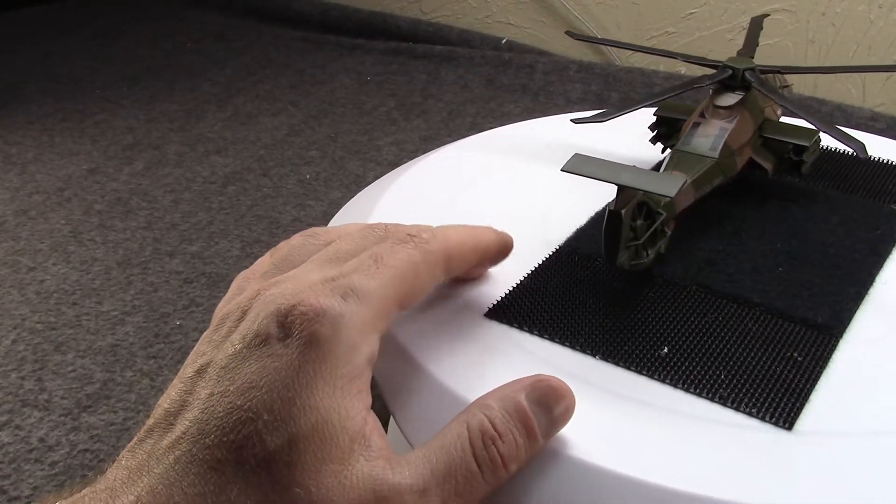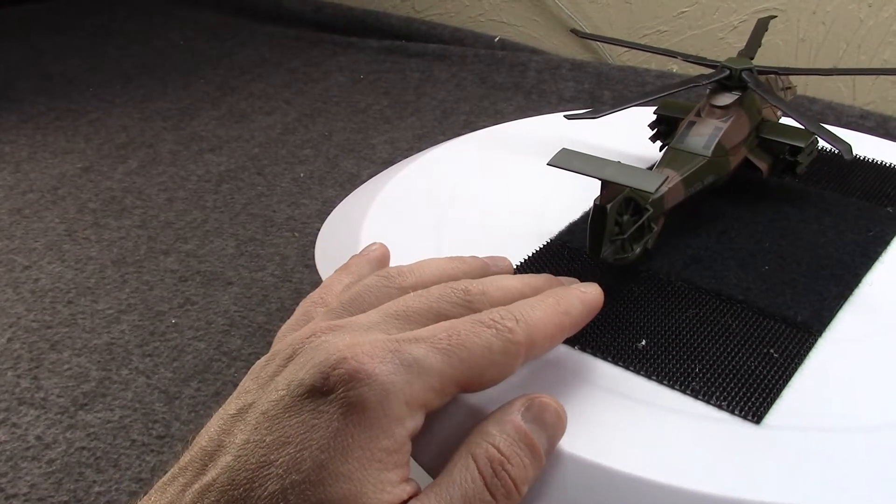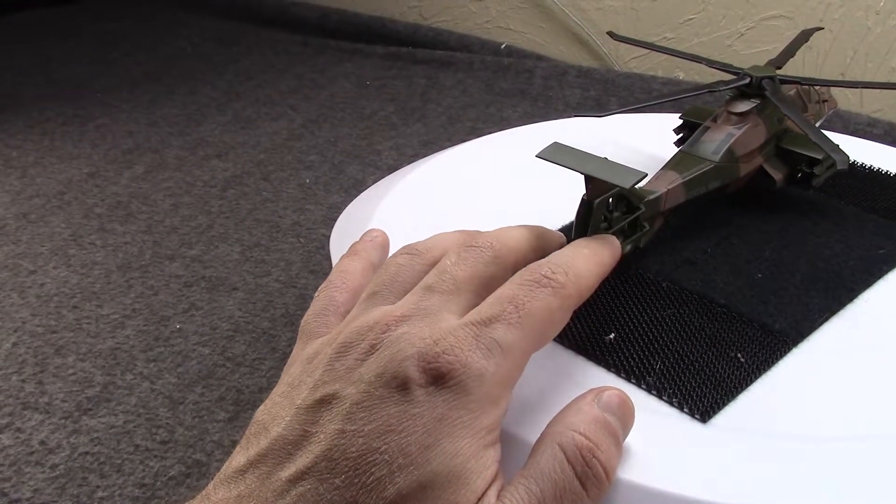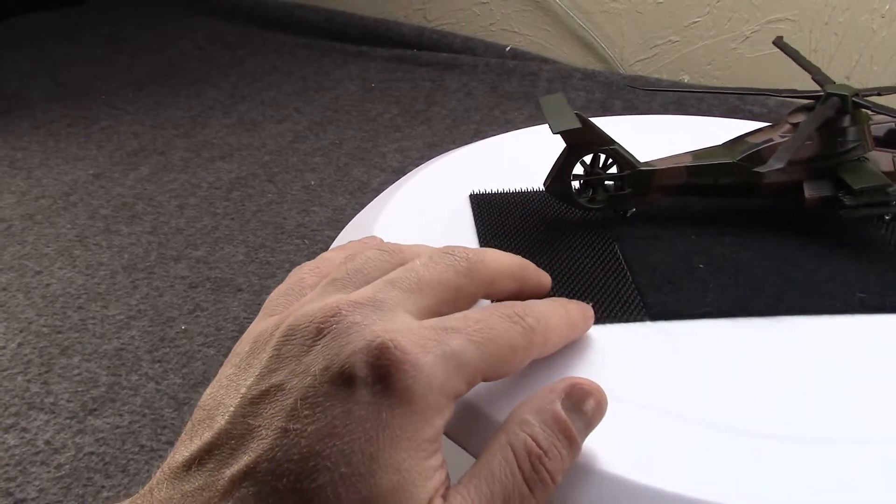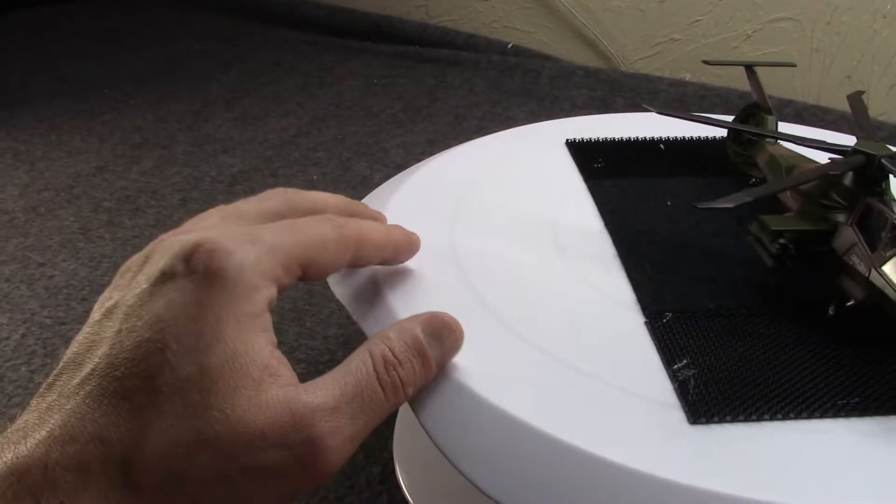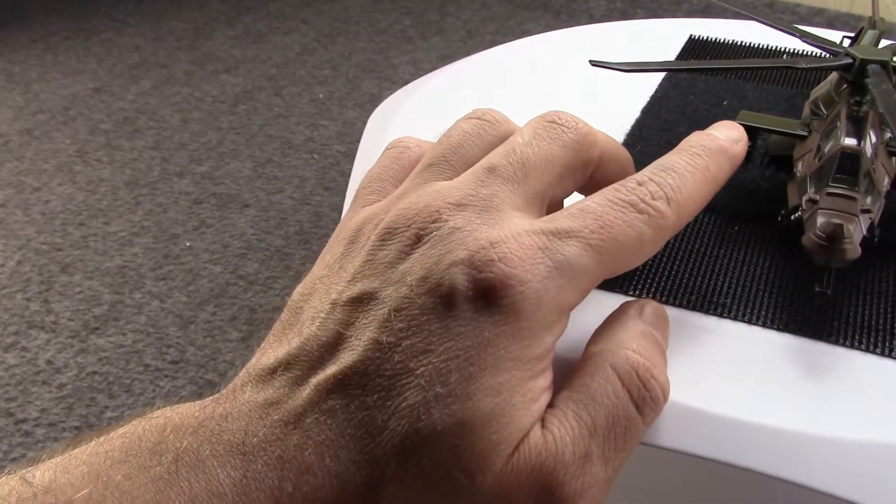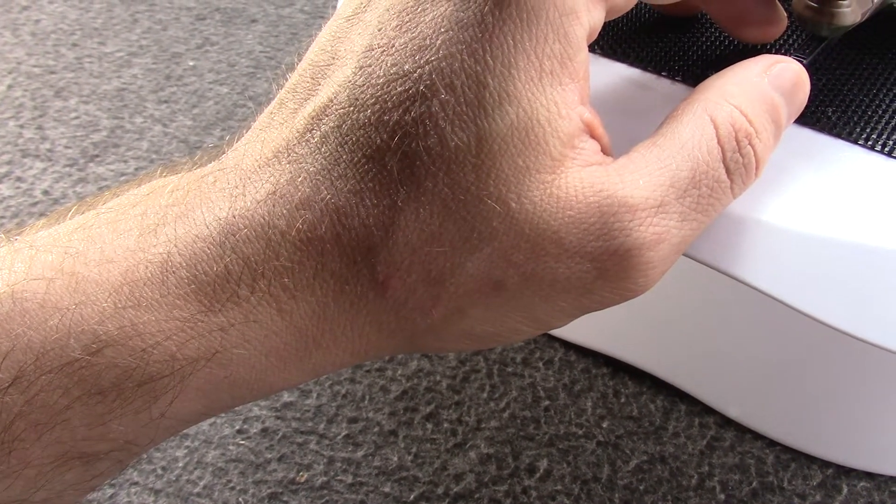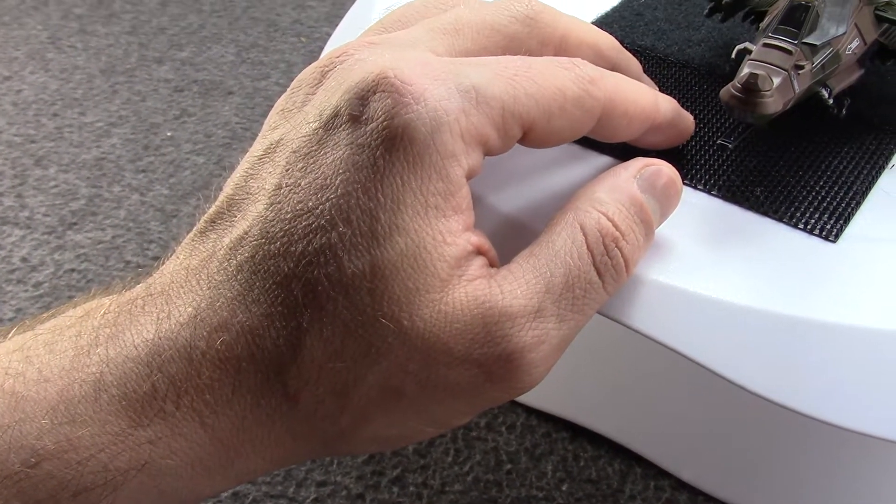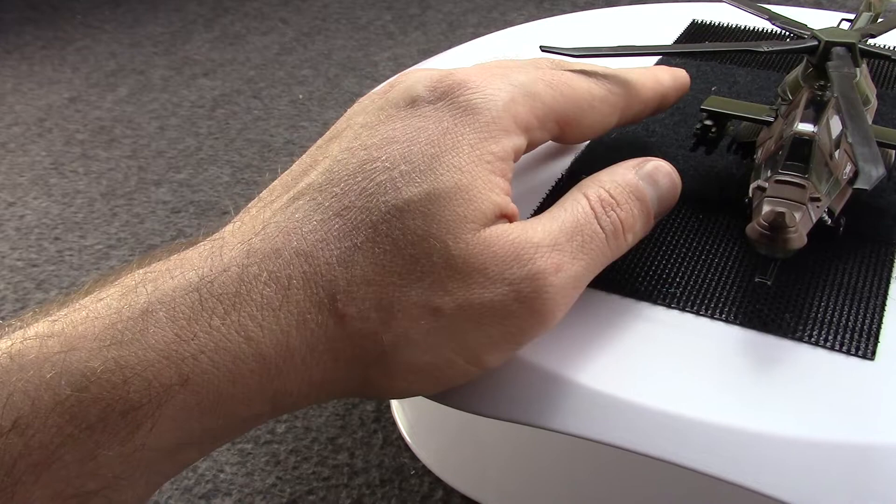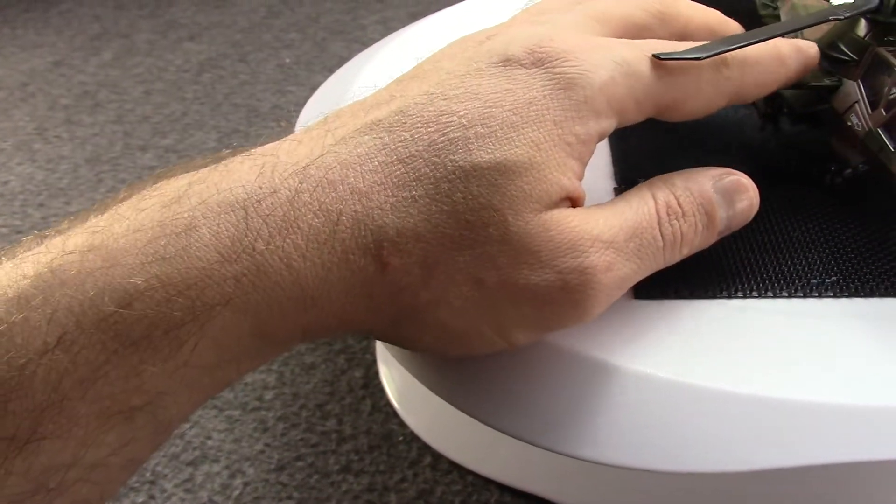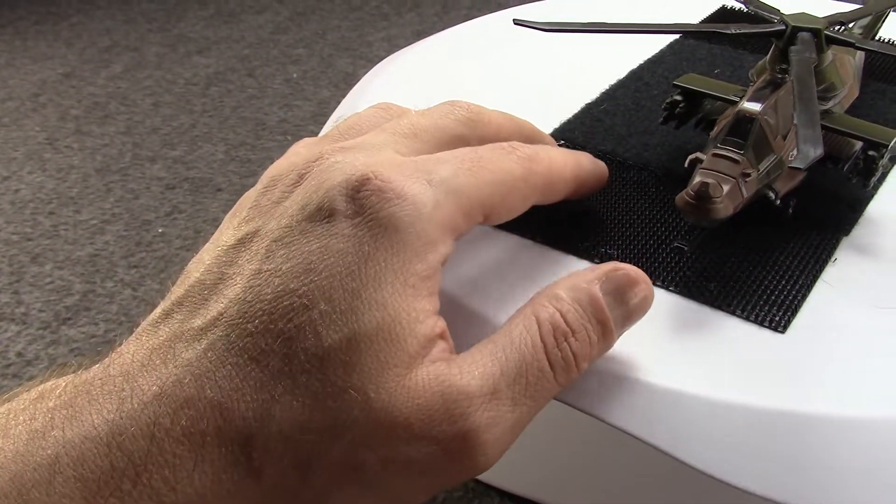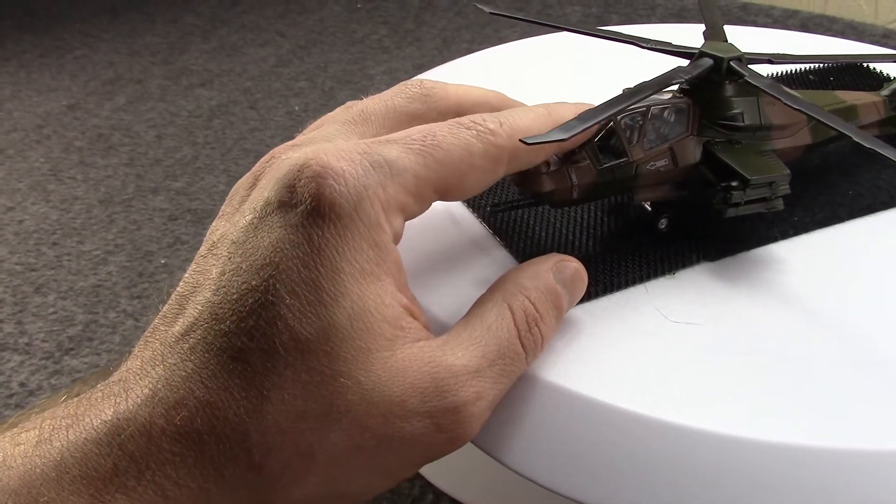It had internal weapons bays, like I said. They could carry a range of weapons including six Hellfire missiles, or Stinger air-to-air missiles, or rocket pods. It also has a retracting 20mm 3-barrel cannon in the nose with up to 500 rounds. On the stub wings, they could mount additional weaponry including more Hellfire, Stingers, Hydra rocket pods.